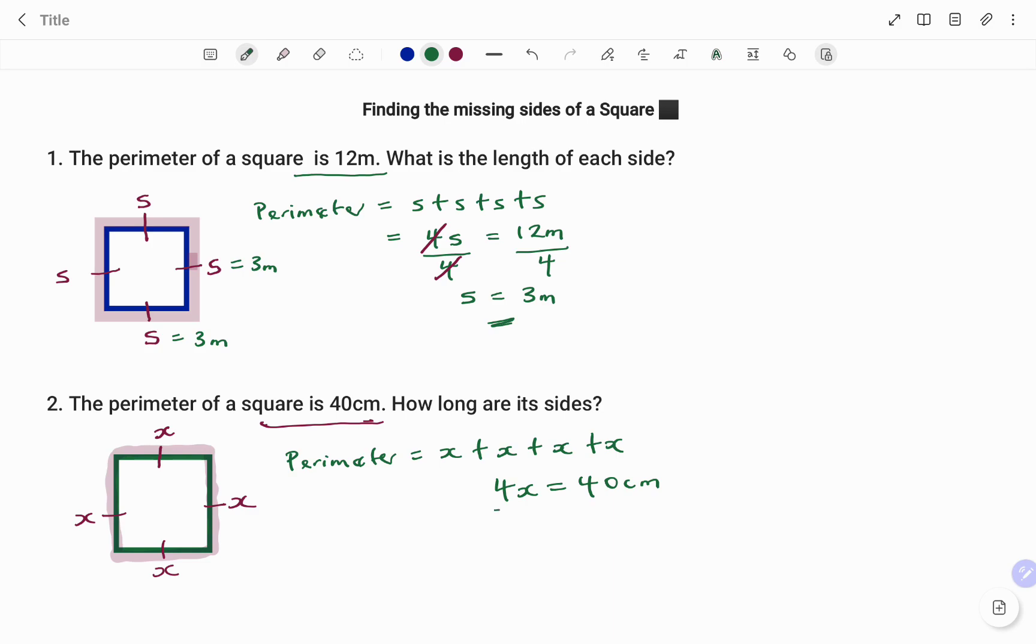To find X, I'm going to divide both sides by 4. Therefore, I have 4 divided by 4, 1, I'm left with X equals 40 centimeters divided by 4, that will give us 10 centimeters. Therefore, the length of the side of this square is equal to 10 centimeters.